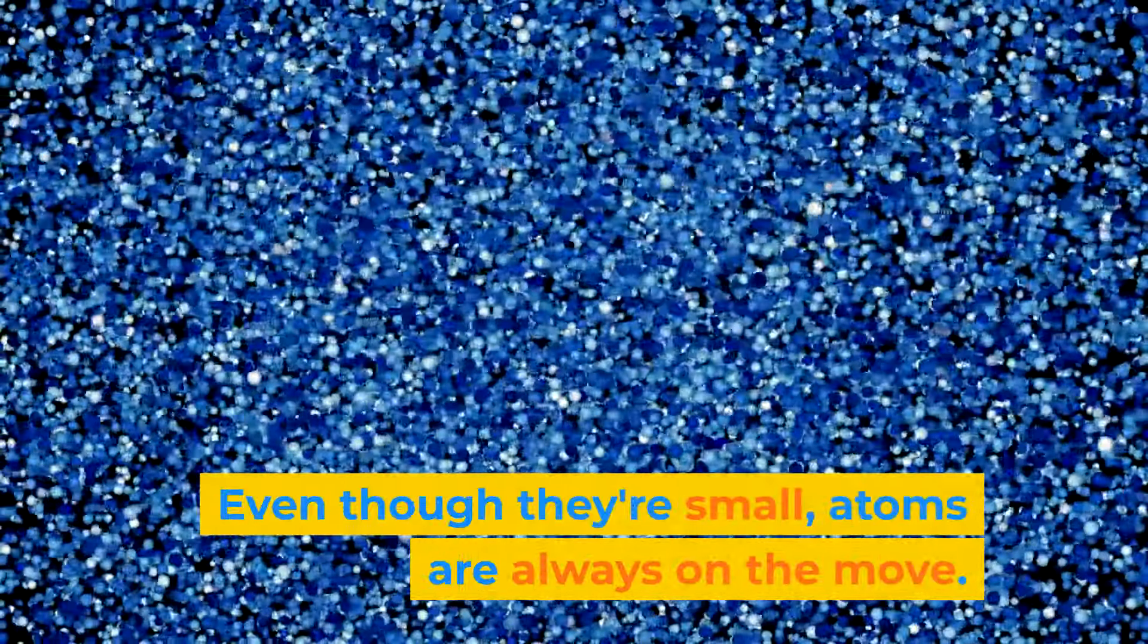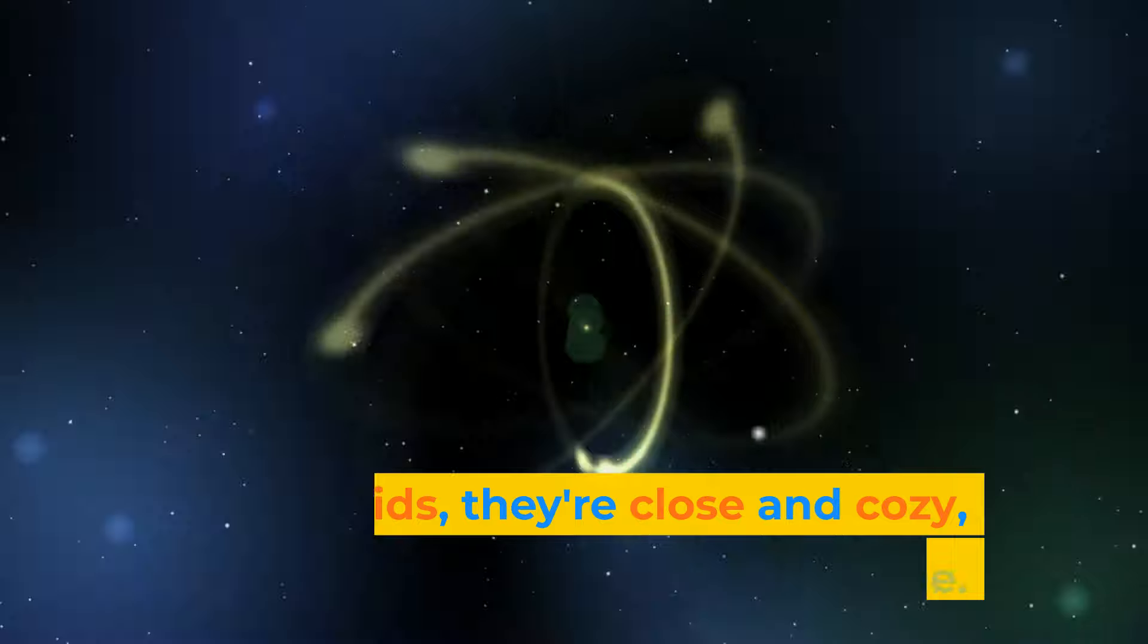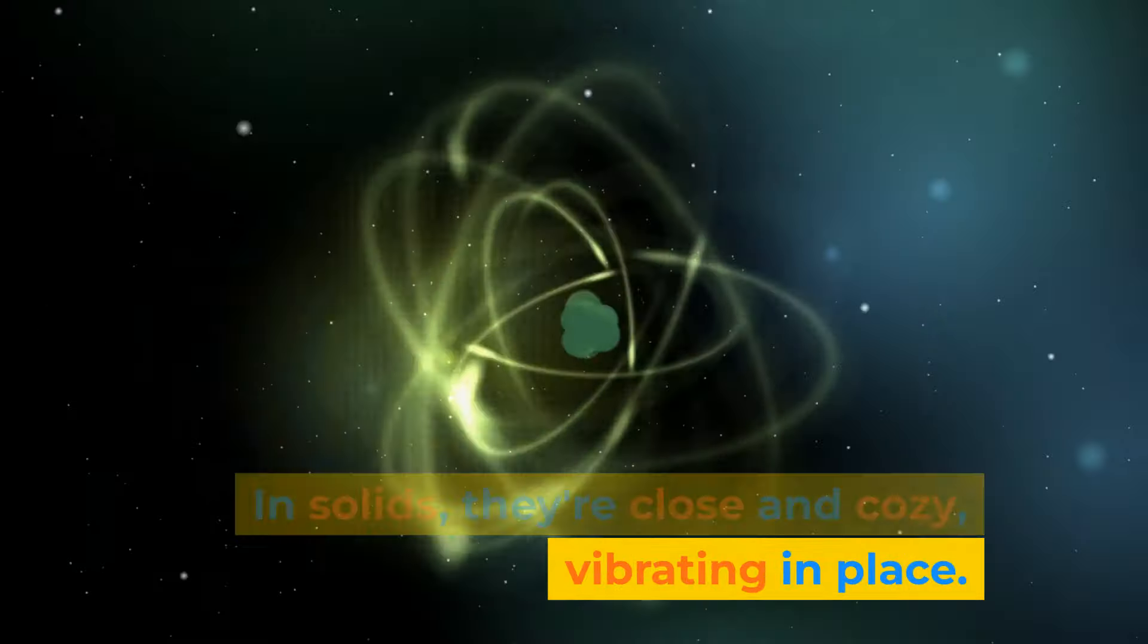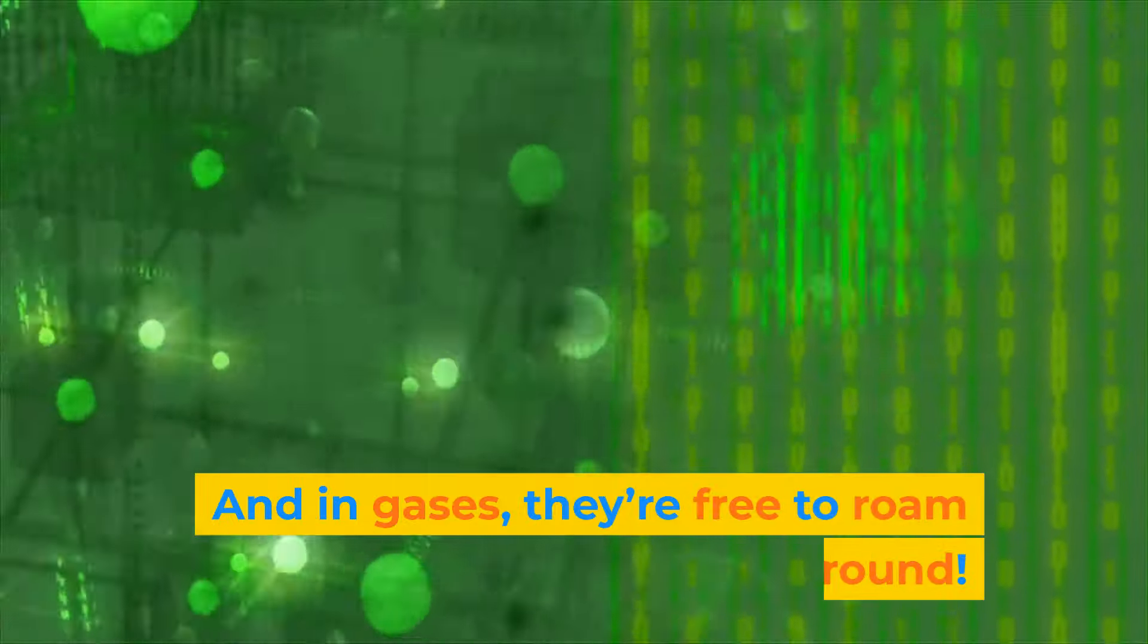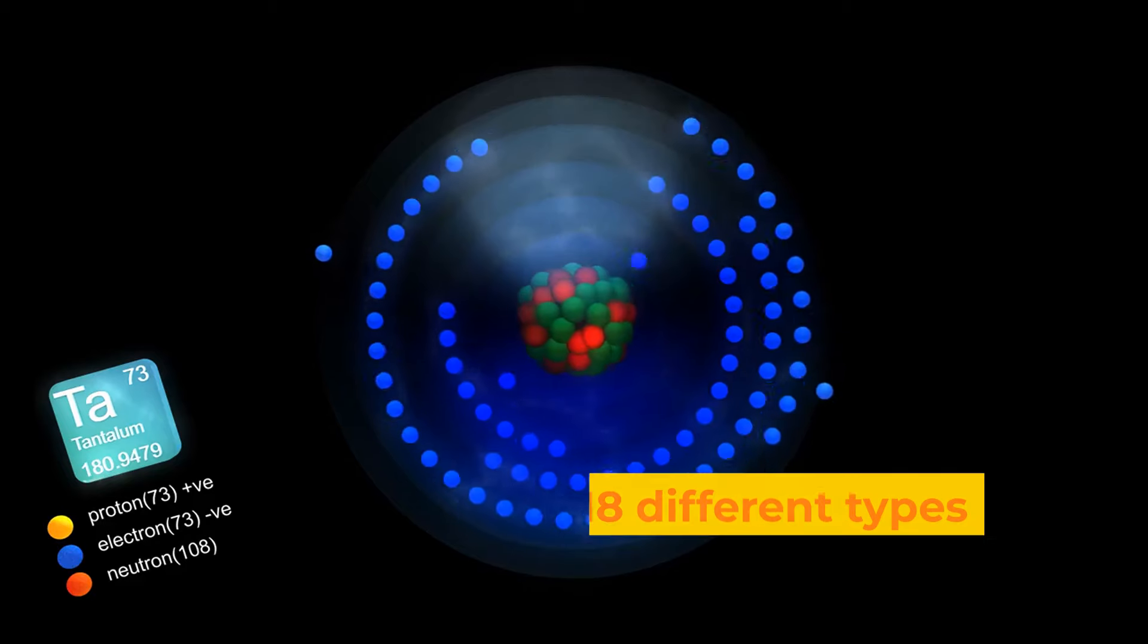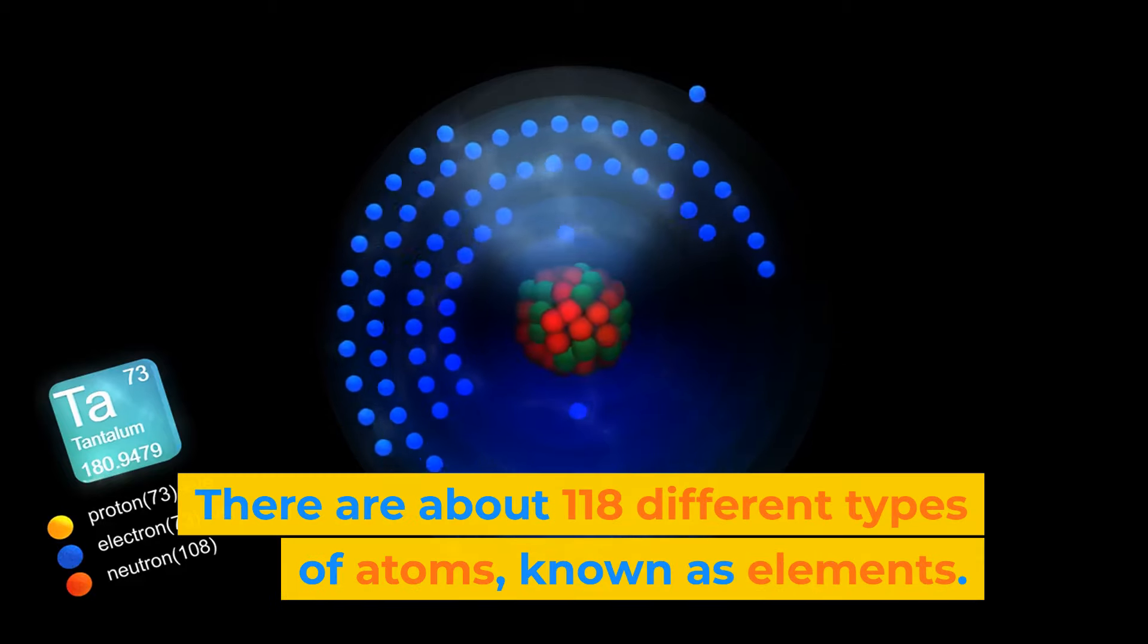Even though they're small, atoms are always on the move. In solids, they're close and cozy, vibrating in place. In liquids, they wander around a bit. And in gases, they're free to roam around! There are about 118 different types of atoms, known as elements.